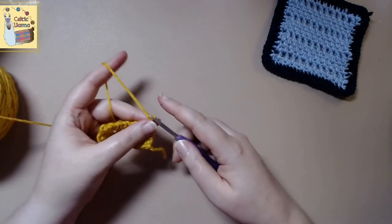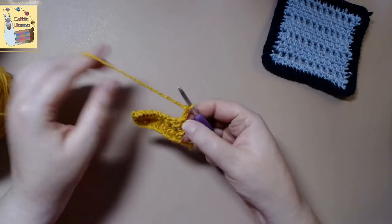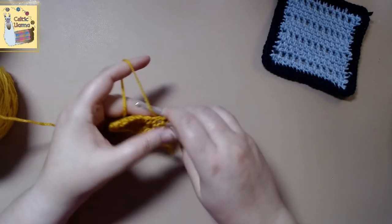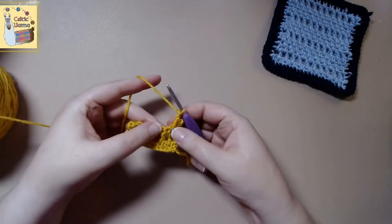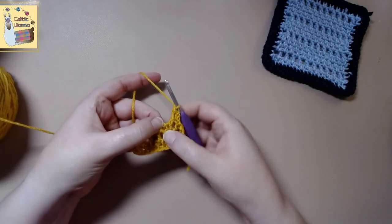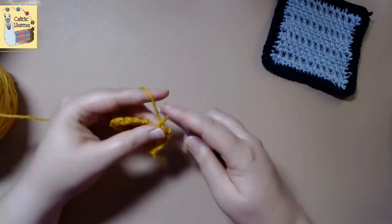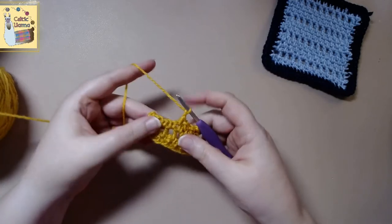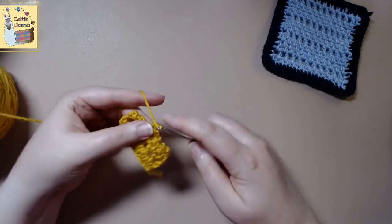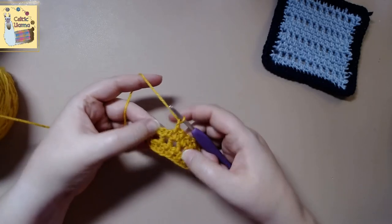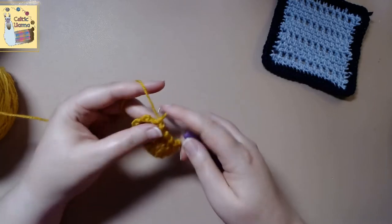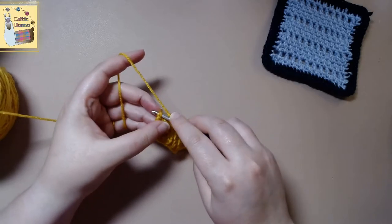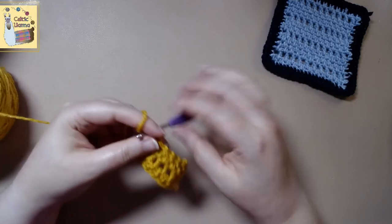So turn your work, chain one. We're on row four. And you want to go into the single crochet space below. And repeat this process all the way to the end of the row. Alright, and make sure that you do your last stitch into the side wall.